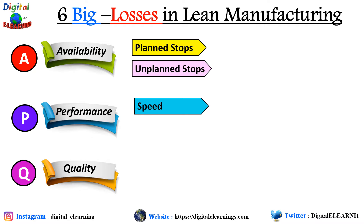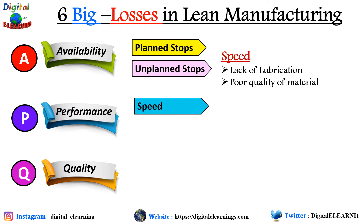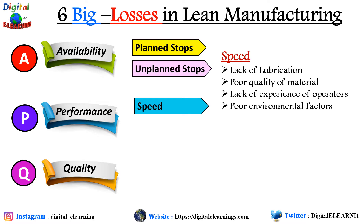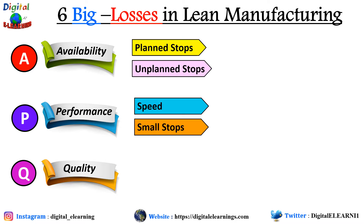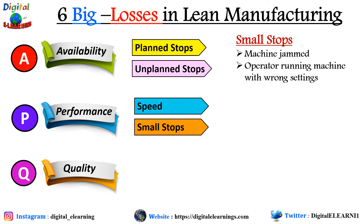Under performance, we have speed loss — this happens when a machine is not running at 100% capacity or is running at reduced speed. It can be due to lack of lubrication, poor quality of material, lack of operator experience, and poor environmental factors like temperature, humidity, and light. The other factor under performance is small stops or frequent stops, where the machine stops for short periods and is quickly resolved by operators within a minute or two — due to jamming, wrong settings, quick cleaning, or resetting input parameters.